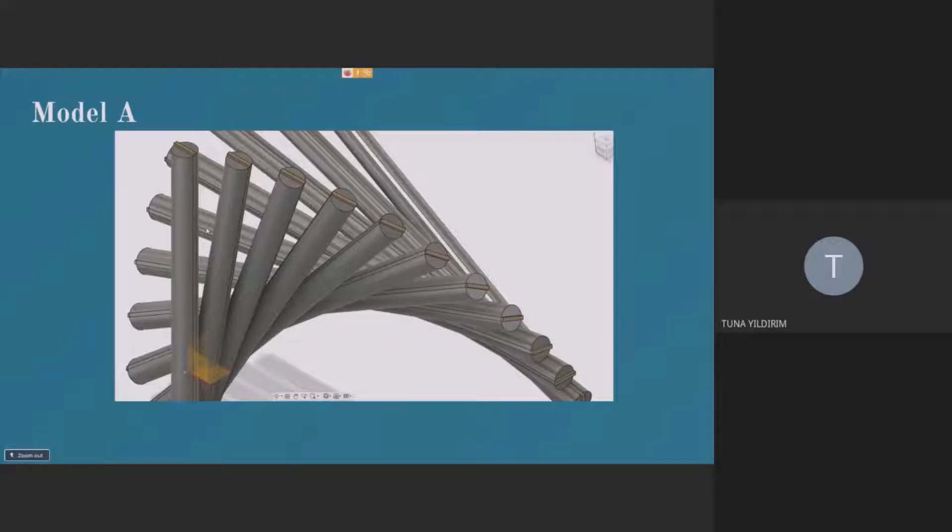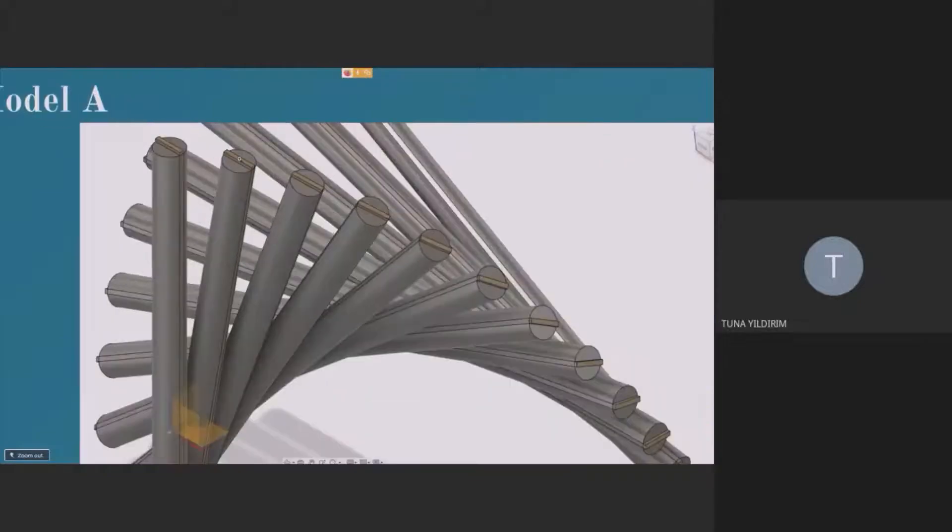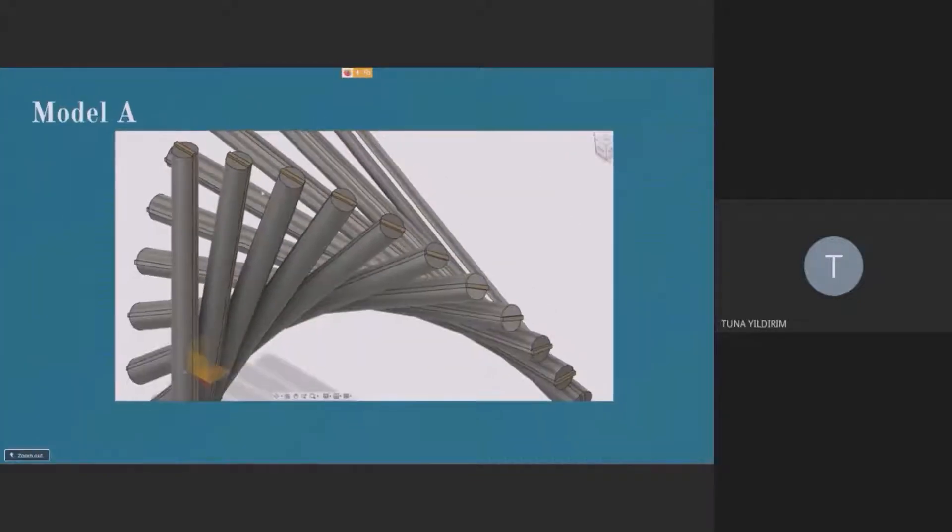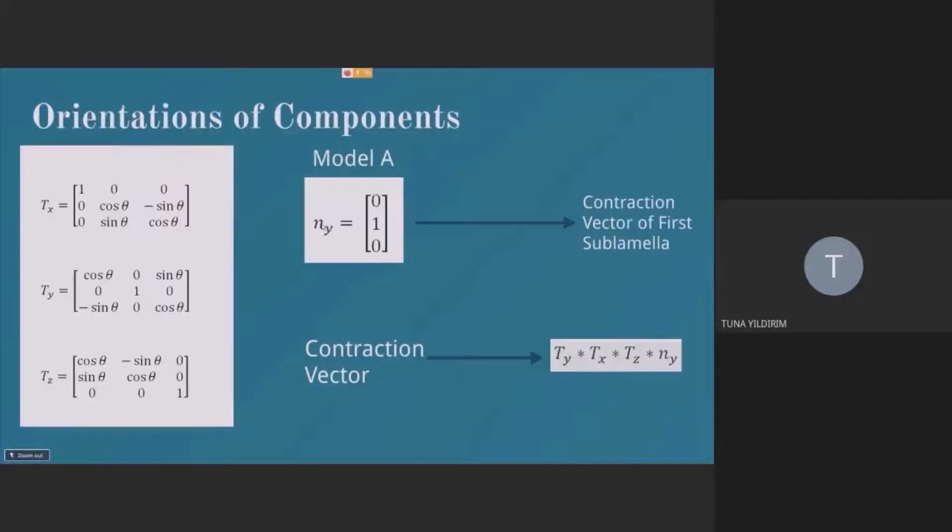When collagen is rotated 10 degrees around y-axis, the hydroxyapatite, which is shown here, is oriented around all of the global axes with the order of z, x, and y. And you can see the order there. And this is my first contraction vector of my first sublamella for model A. These are my transformation matrices for the calculations.